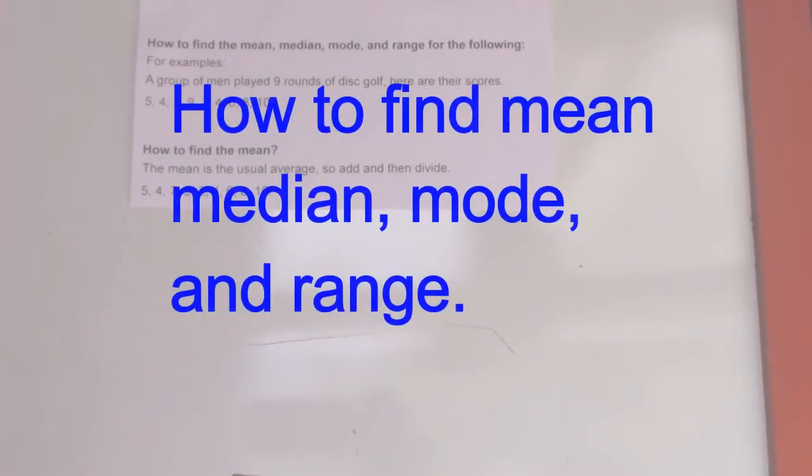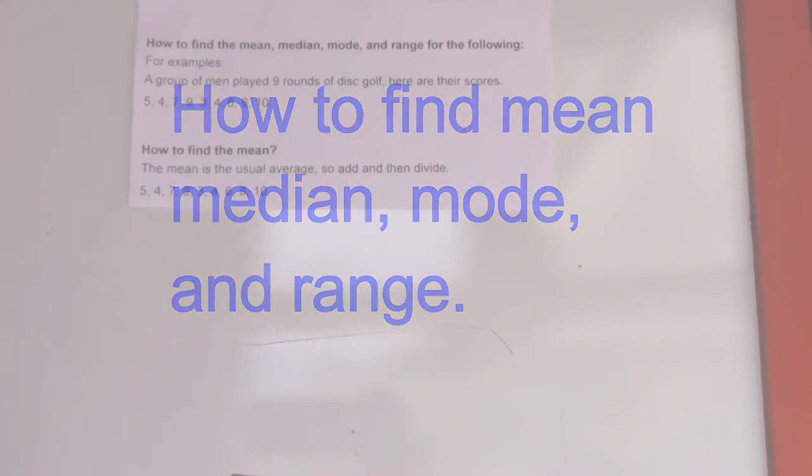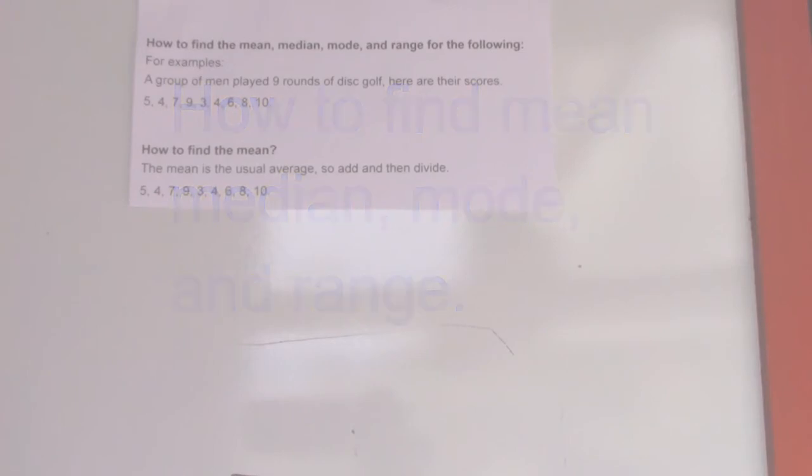Hello guys, welcome back to my GED notes video. Today I would like to share with you a math lesson on how to find the mean, median, mode, and range. Here is my example: a group of men played nine rounds of disc golf. Here are their scores: 5, 4, 7, 9, 3, 4, 6, 8, and 10.